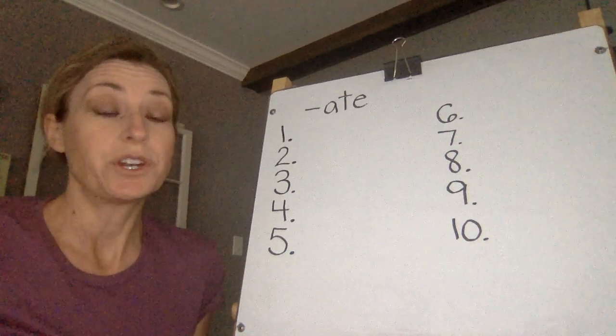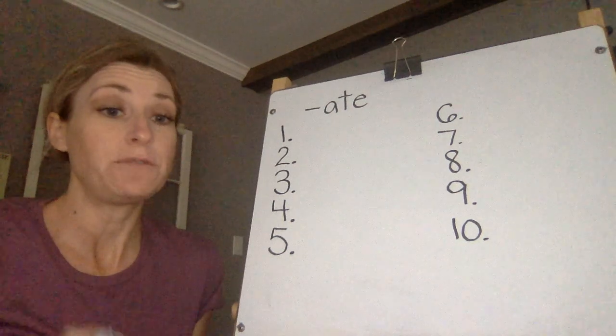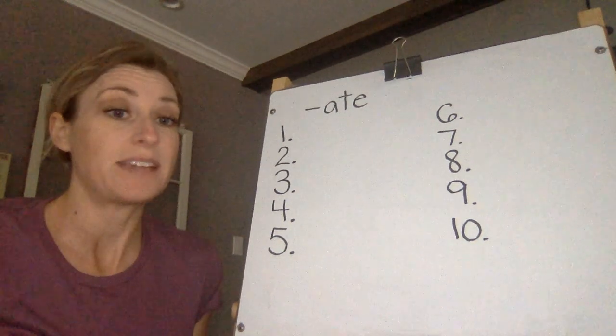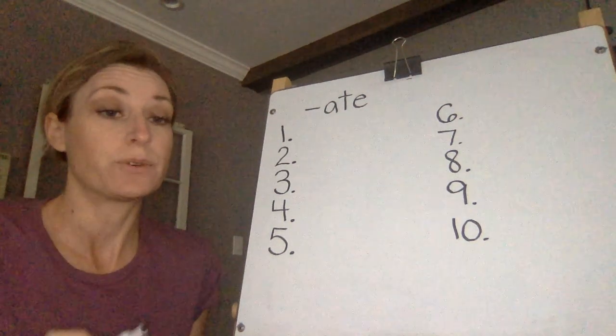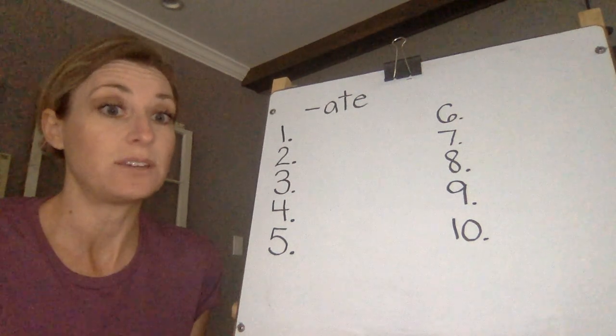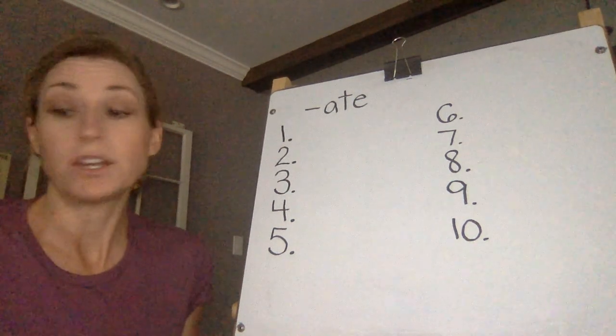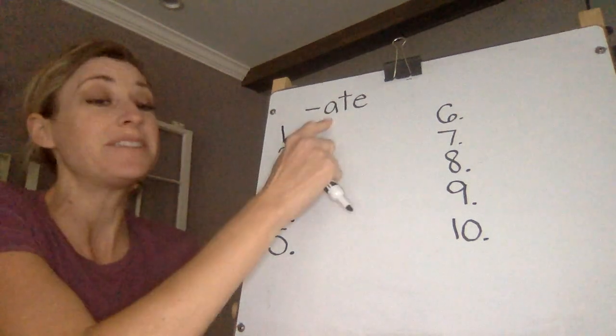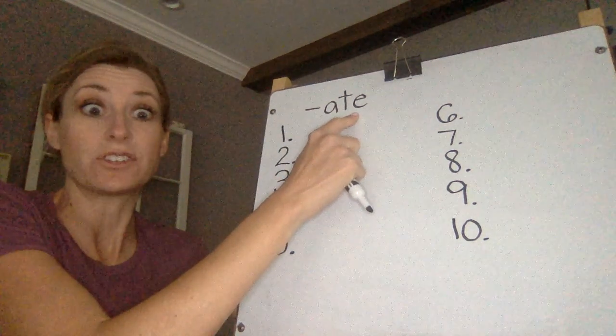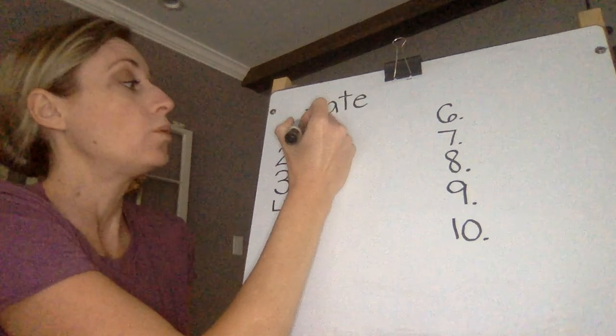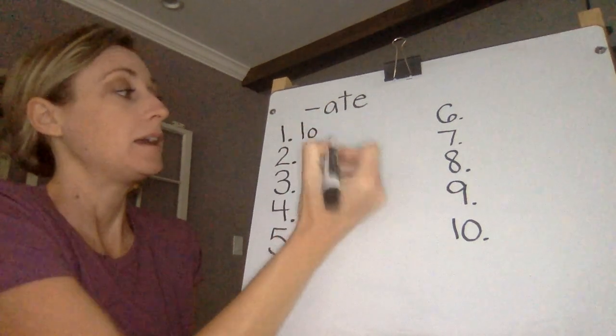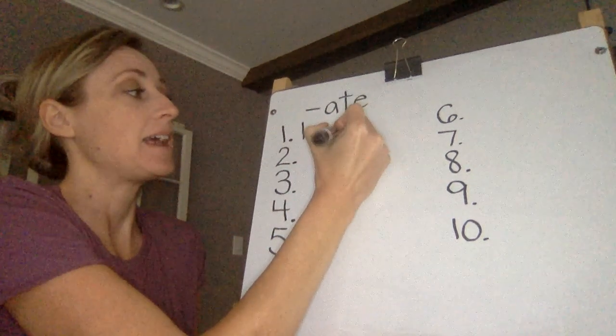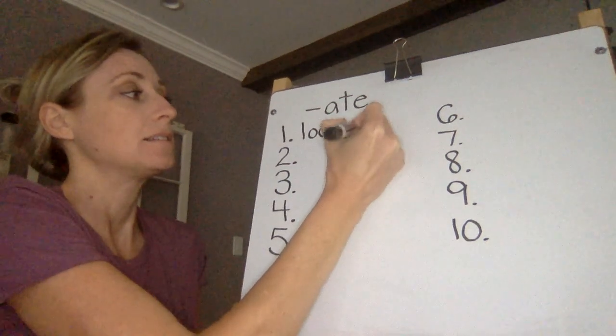Okay, so we're going to go ahead and spell these. If you made a mistake, that's okay. Circle it and write the correct spelling so that you can see where you made your mistake. Okay, number one, locate. I'm hearing that eight at the end, so it's not the schwa sound. Lo-cate. L-O-C-A-T-E. Locate.